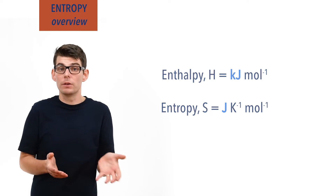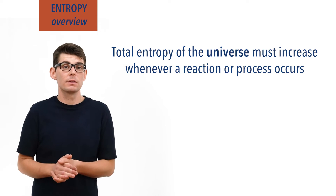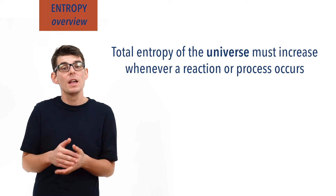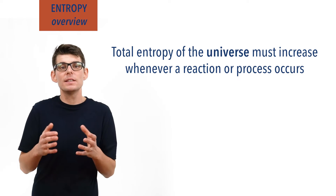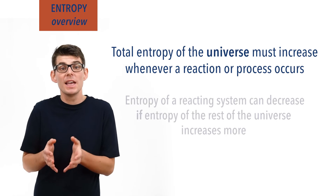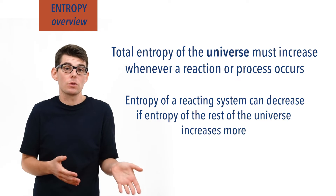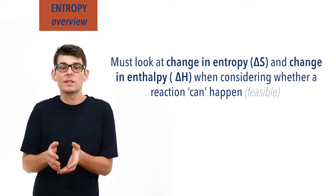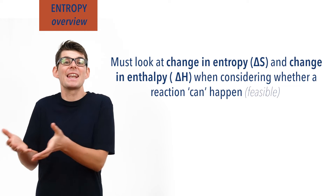The total entropy of the universe must always tend to increase when a reaction or process occurs — even if the change in entropy is very small, it must always increase. But be careful: the entropy of a system, such as a group of reacting particles, can decrease in a reaction. It is the entropy of the entire universe that must always increase. The entropy of a system can decrease if the entropy of the rest of the universe increases more than the system decreases. This is why entropy, as well as enthalpy, must be considered when looking at the feasibility of a reaction — whether a reaction can actually happen in reality.